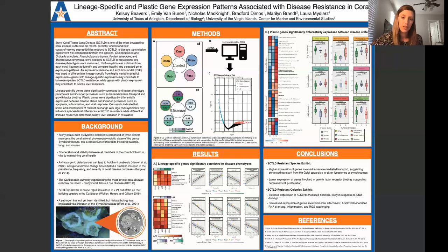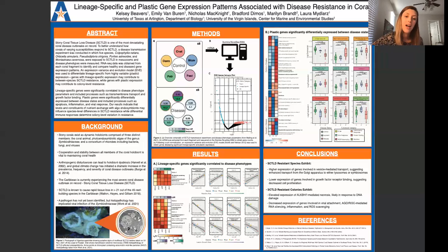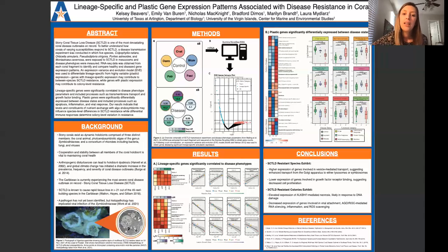From the lineage specific genes we wanted to ask whether any of these were correlated to our disease parameters and could be responsible for species level differences in susceptibility. We found four genes highly correlated to relative risk and eight genes highly correlated to lesion growth rate. Species with low relative risk and lesion growth rates exhibited higher expression of genes involved in vesicle mediated transport such as carboxypeptidase D, cytoplasmic D9 heavy chain 1, and transmembrane protein 222. On the other hand, species with high relative risk and lesion growth rates exhibited lower expression of genes involved in growth factor receptor binding such as the palmetaltransferase and the EH domain containing protein 1.